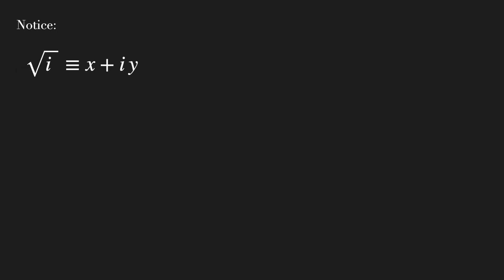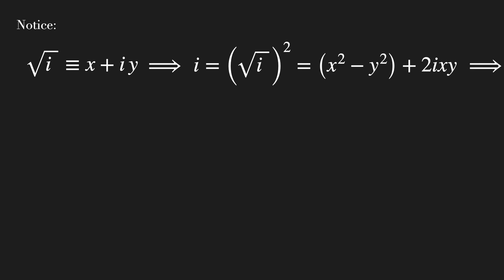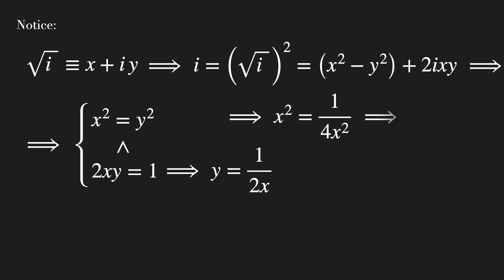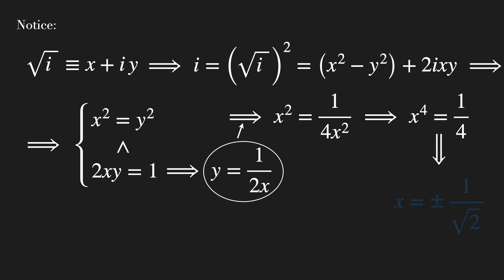Notice that the square root of i can be expressed as x plus iy. By squaring both sides, we get an expression already separated between real and imaginary parts. From it, we can create a system of equations. Using the substitution y equals 1 over 2x in the first equation, we can solve for x and find that there are two values: plus or minus 1 over the square root of 2.